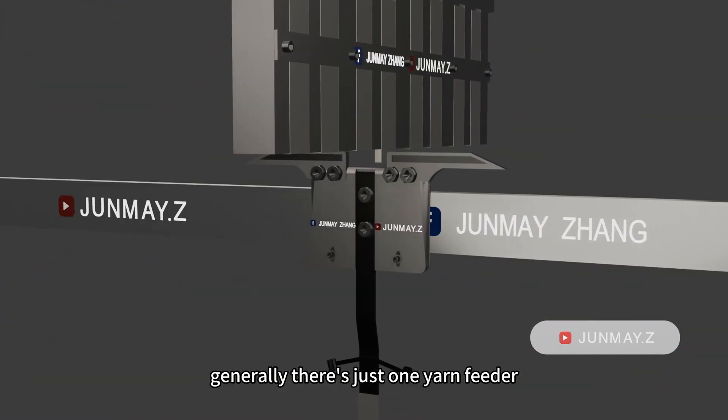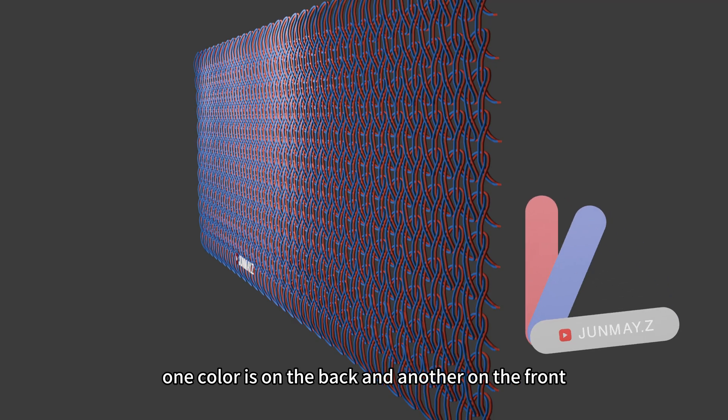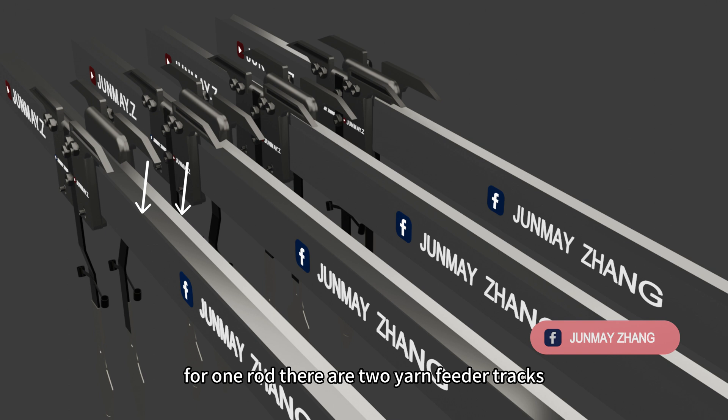Generally, there is just one yarn feeder pushed from side to side to feed the yarn for knitting needle to knit. But if you want to knit a single jersey, one color is on the back and another on the front. For general flying machine, it has four yarn feeder rods. For one rod, there are two yarn feeder tracks. So in total, there are eight yarn feeder tracks.